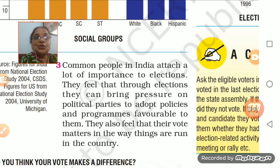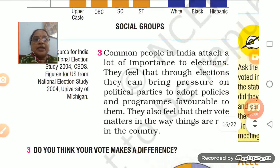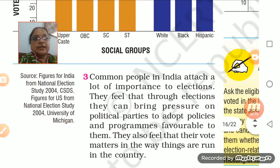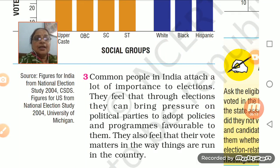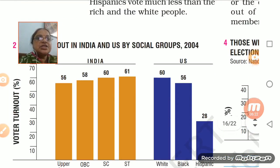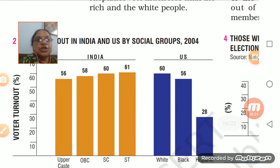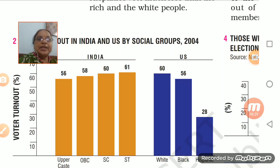Political parties keep serving the voters and whatever laws are being made are also according to voters' requirements. In India, election studies have been done, and in the United States, election studies have been done at the University of Michigan. Just check how many people are going for voting across social groups.